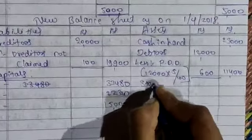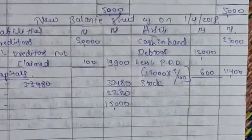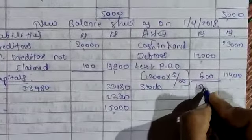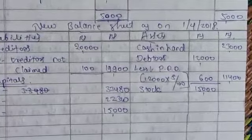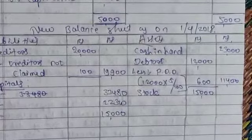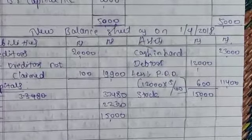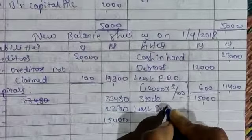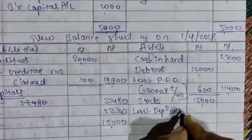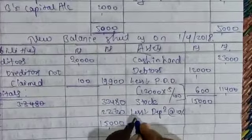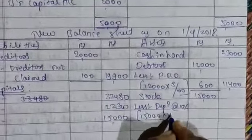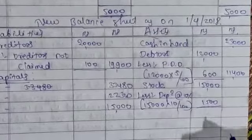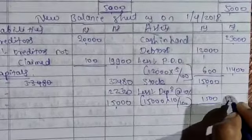Next one is stock value. There is an adjustment for the stock. The balance value of the stock is 15,000. And the adjustment is a decrease in the value of stock by 10%, so that should be deducted here — depreciation at 10%. On 15,000, calculate 10% — that is 1,500. So that becomes 13,500.